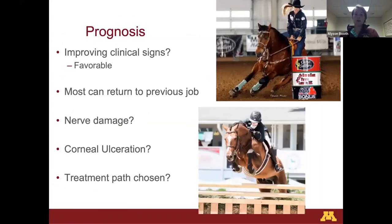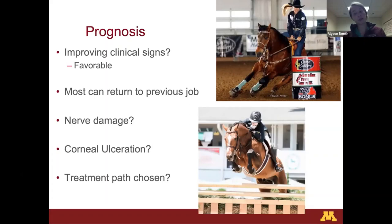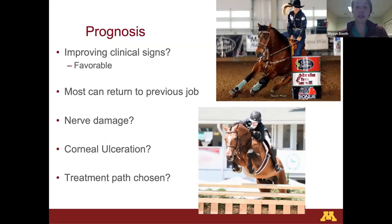Overall prognosis with surgery is pretty favorable. If surgery isn't an option, medical management is still worthwhile — it can just be a long road. Most of our horses here have been able to return to their regular job; over time the nerve loses inflammation and calms down. Corneal ulcers typically resolve with proper eye care. If enucleation is necessary, horses still do well with one eye. The biggest factor guiding prognosis is whether surgery or medical management was chosen — surgery provides the best option for the horse to return to normal.